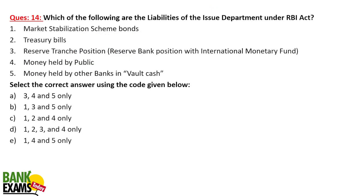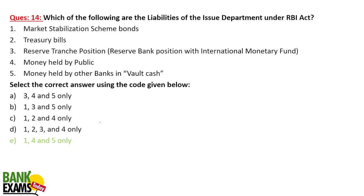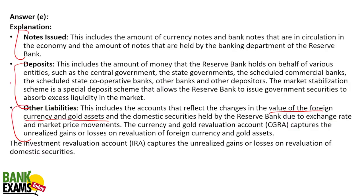Question four: which of the following are liabilities of the issue department under the RBI Act? These include notes issued, notes available for deposits, and accounts that reflect changes in the value of foreign currency and gold assets. Market stabilization scheme bonds, money held by the public, and money held by other banks in cash vaults are the liabilities of the issue department under the RBI Act.